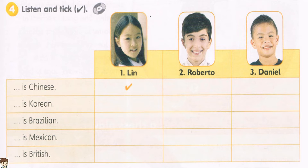2. Hey, Laura. Who's your friend? This is my friend Roberto. Hi, Roberto. I've got a friend named Roberto. He's Mexican. Are you from Mexico, Roberto? No, I'm Brazilian. That's cool.